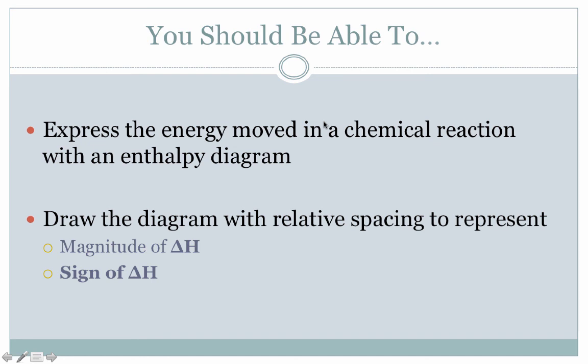And that's pretty much it. At this point, based on the content, you should be able to express the energy movement of the chemical reaction with enthalpy diagrams. I should be able to show you a reaction with a value of delta H, and you should be able to translate into one of these graphs. And then you should be able to draw these diagrams not only accurately, but with relative spacing that should represent the magnitude of the delta H value, i.e. the size of the gap, and the sign of delta H in whether the graph slopes up or the graph slopes down.